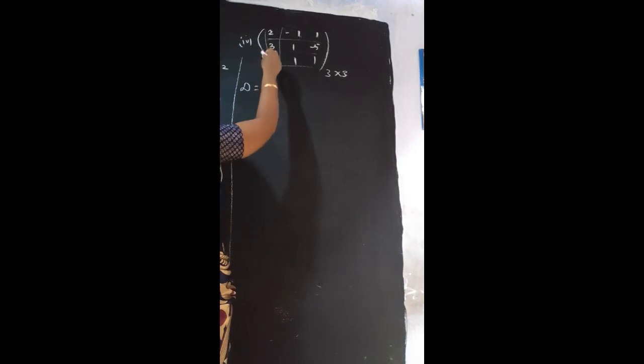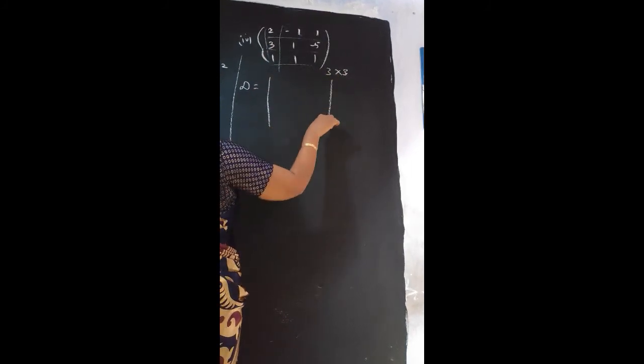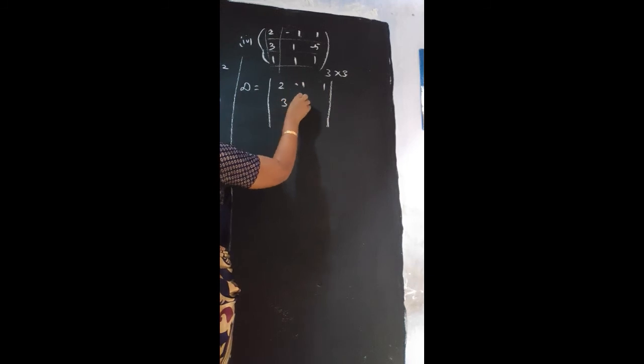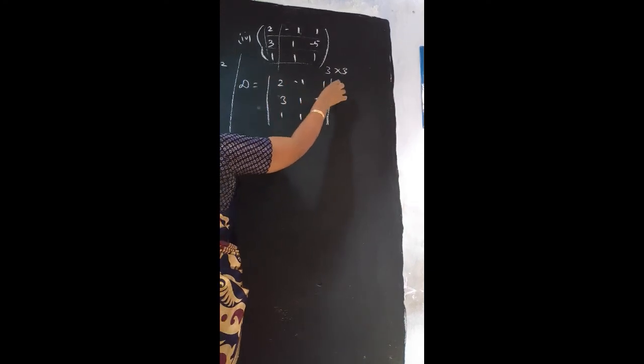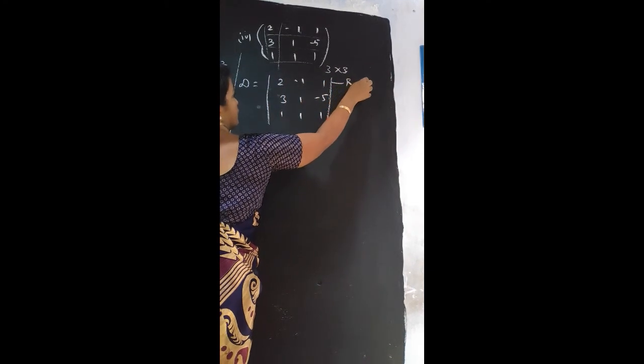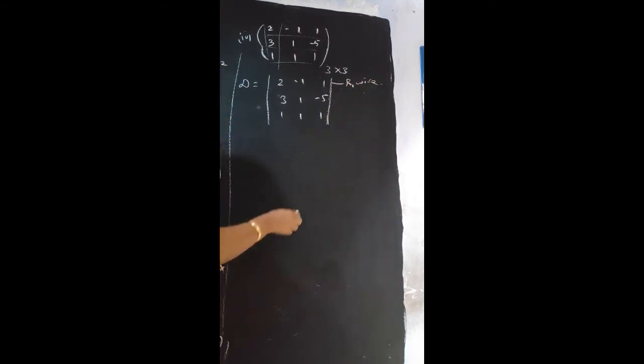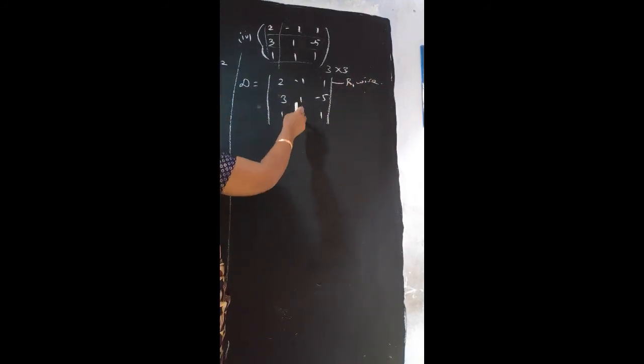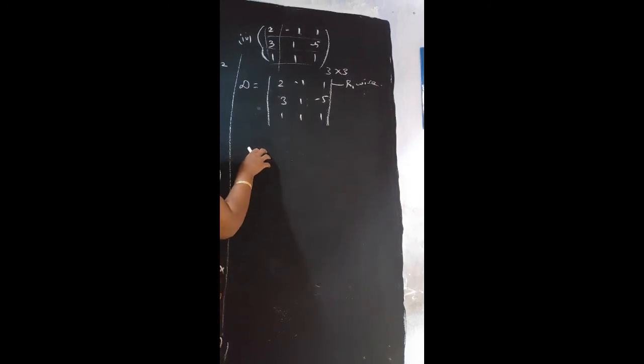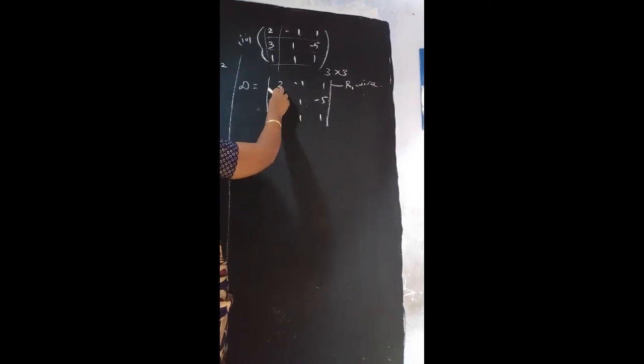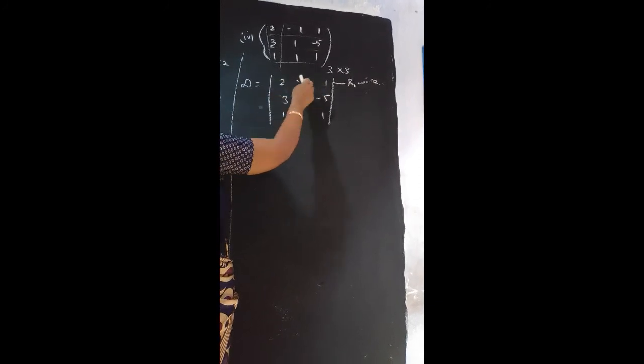First we convert this matrix into determinant value. 2, minus 1, 1, 3, 1, minus 5, 1, 1, 1. We can find the determinant value using R1 wise. We can find any one - R1, row 1, row 2, row 3, C1, C2, C3. However, we will get same value only. But now we are going to find the value R1 wise.